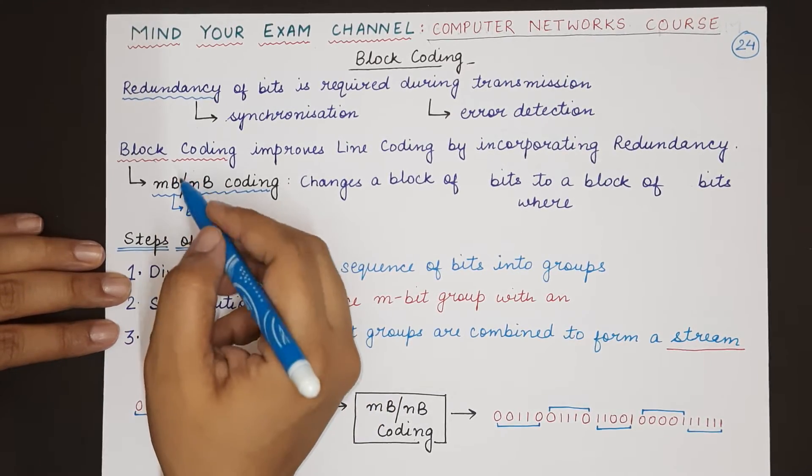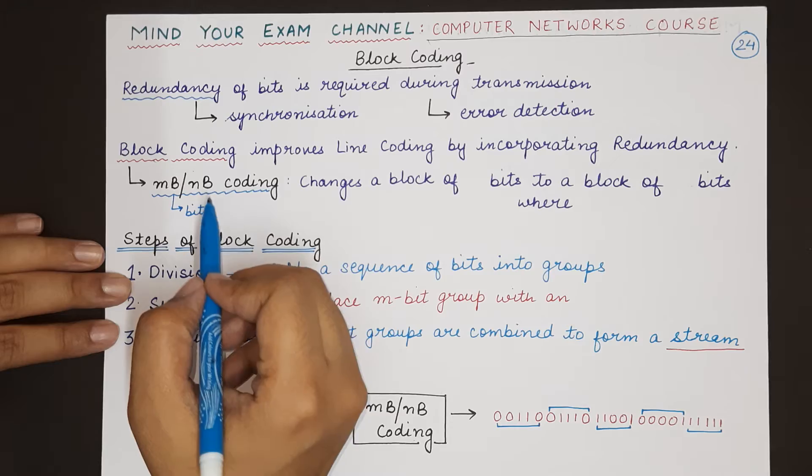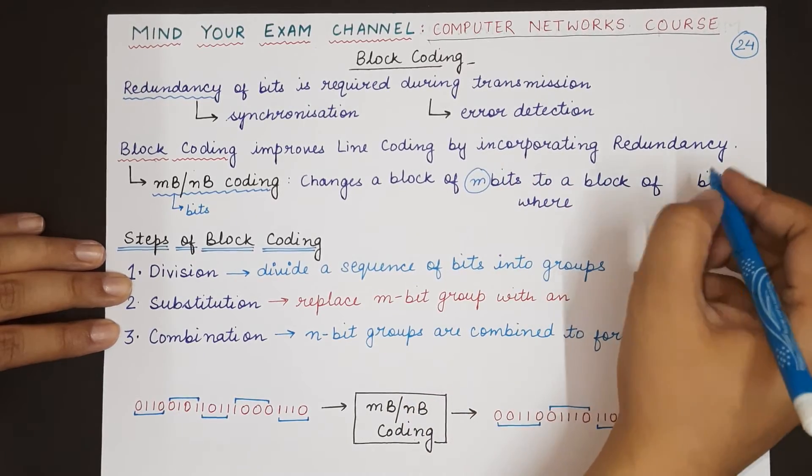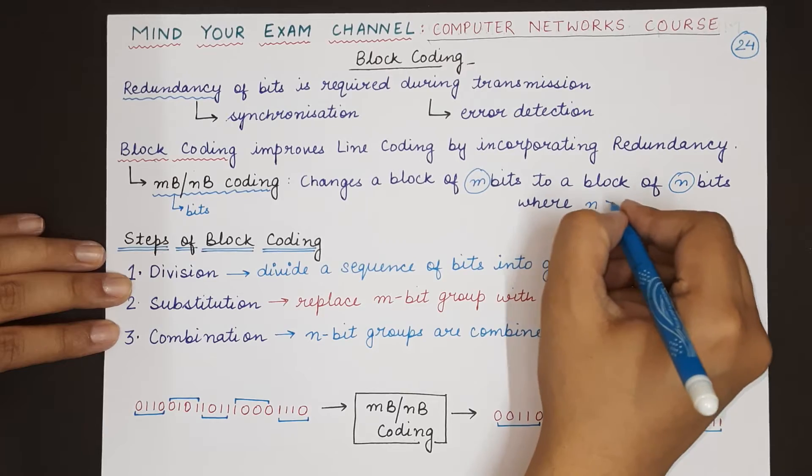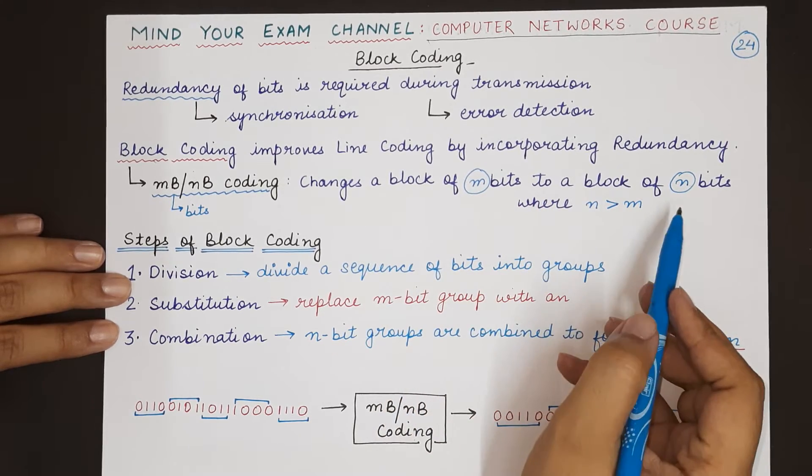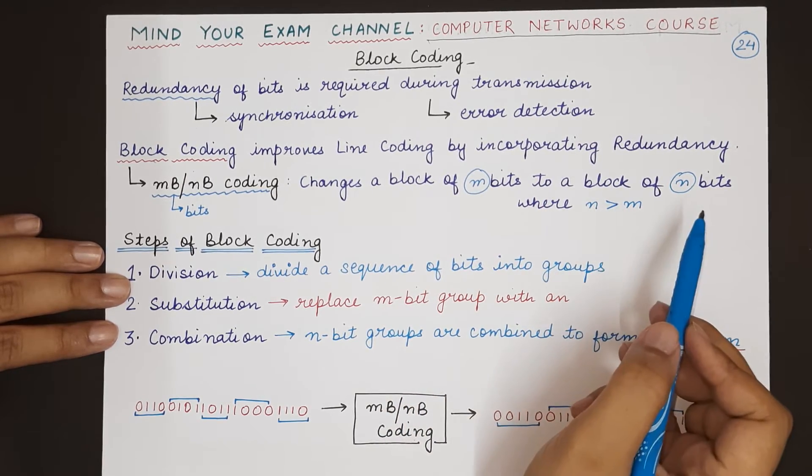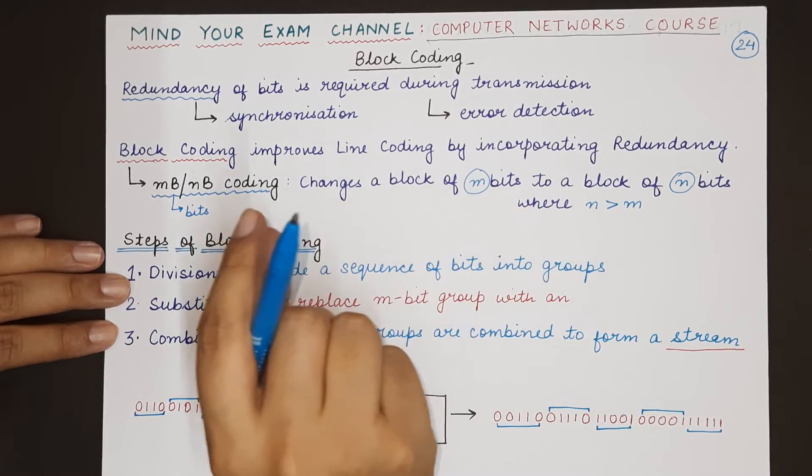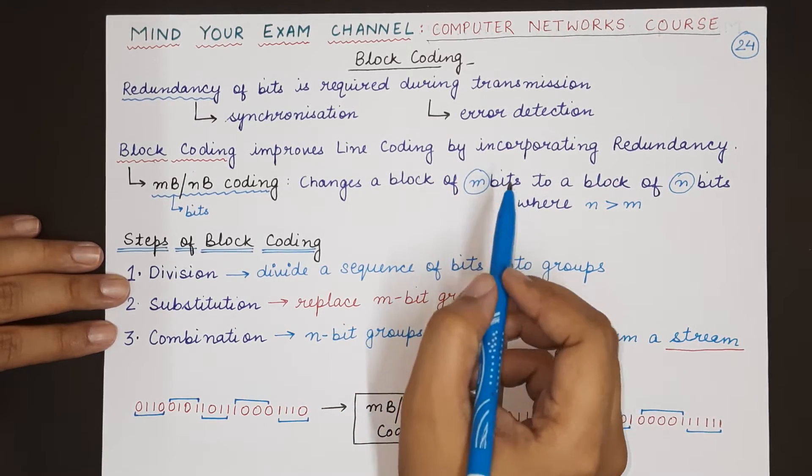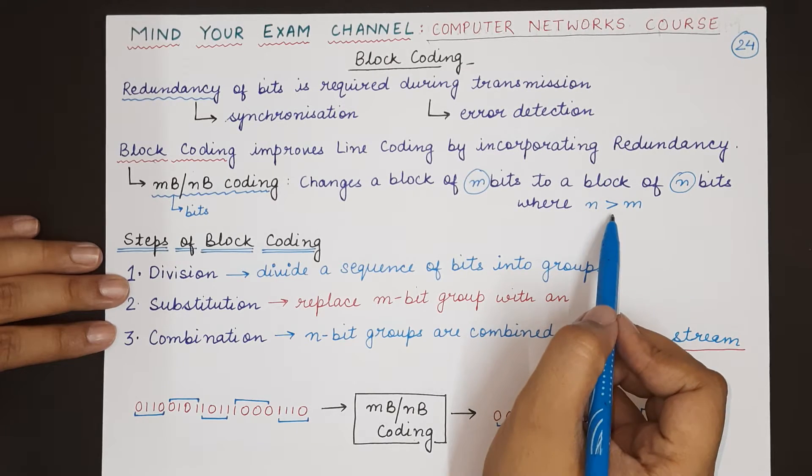mB means m bits—B stands for bits—so m bits are replaced with n number of bits. This slash is very important so that you do not confuse it with line coding techniques. Block coding basically changes a block of m bits into a block of n number of bits, where n is always greater than m. So basically, if there were initially 4 bits, you are now increasing the number of bits to say 10 bits, so it will be 4B/10B encoding or block encoding.